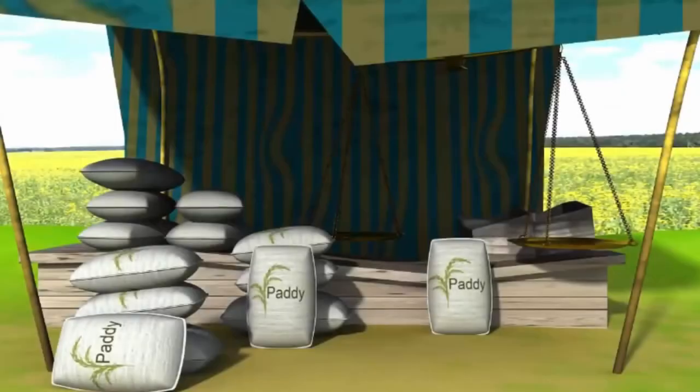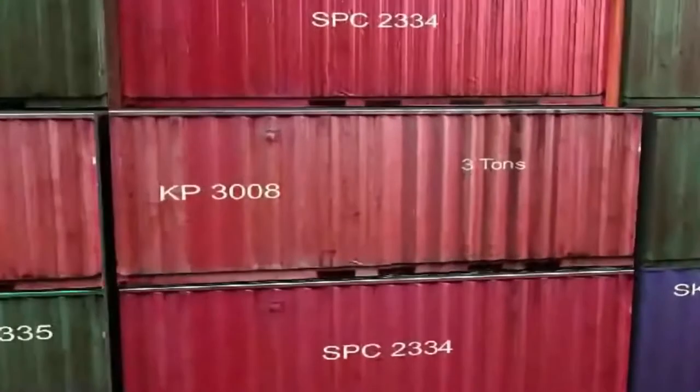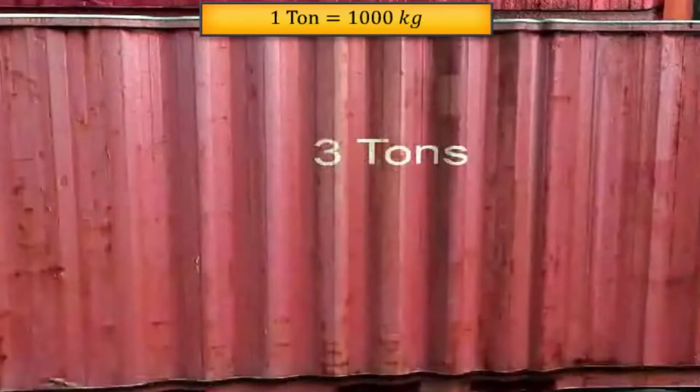If the magnitude of the mass of the object to be measured is much higher than the kilogram, say for example the mass of a paddy bag, units like quintal, which is equivalent to 100 kilograms, is considered. Another higher unit is the ton, which is equivalent to 1000 kilograms. Masses of cargo containers are expressed in tons.